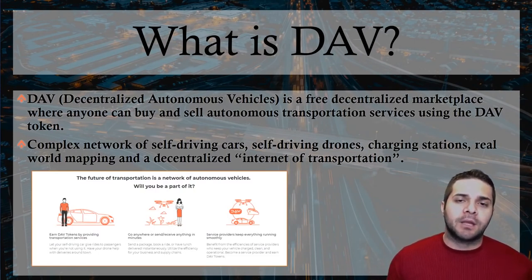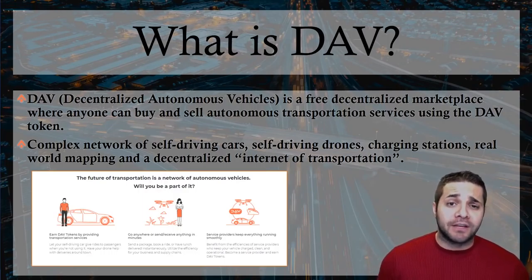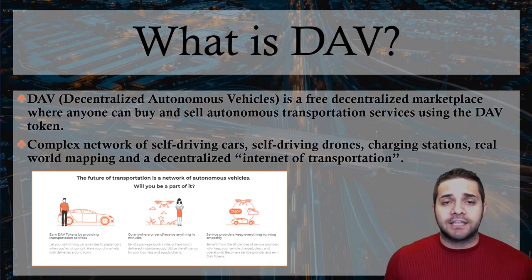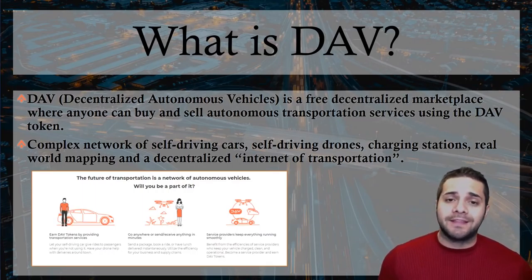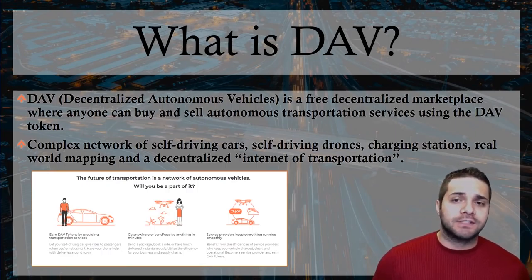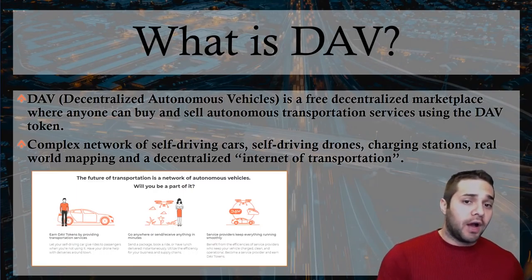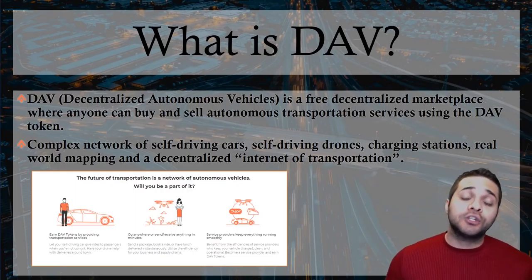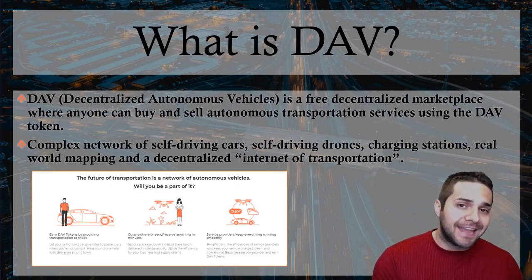So what is DAV? DAV is a computer network that connects self-driving vehicles such as cars, trucks, and drones to everyone on that network. Users can pay for the use of any of these vehicles with the DAV token to get a ride somewhere or pickup or deliver a package. People who own these vehicles or the charging station on the network can make money for the services that they provide. This means the average person could have an entire network of self-driving vehicles at their fingertip to bring them anything or take them anywhere with the DAV token.